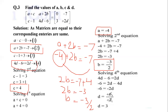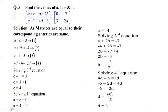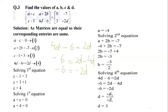Now lastly for d: 4d minus 6 equals 2d. Rearranging: 4d minus 2d equals 6, so 2d equals 6, and d equals 6 by 2, giving d equals 3.